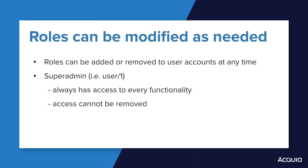User roles can be given or removed from any site user. The exception is the first user created, which is user one, sometimes called the super admin, who is able to do everything on a Drupal site. Drupal access checks will always allow this account, the user one account, to take any action. User one is the only account that has permanent or non-removable access to everything based on the account itself. All other users can have permissions added or removed as their status changes over time. User one has access to all permissions all the time.